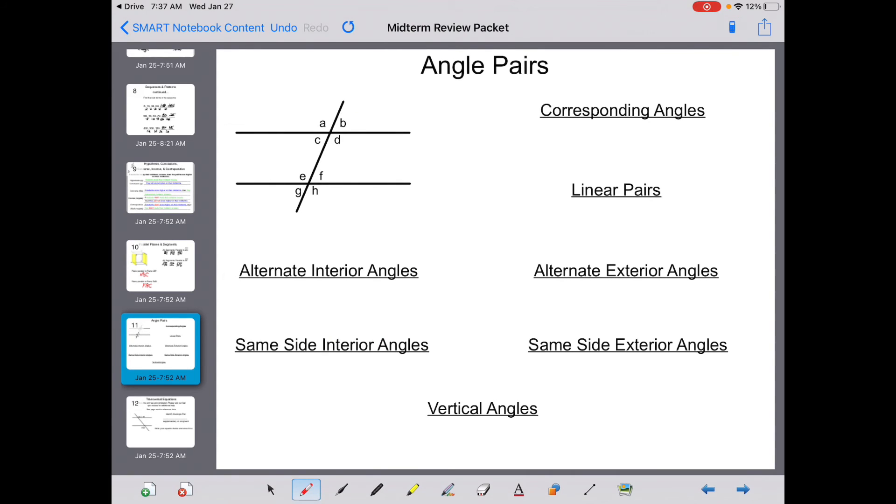Your angle pairs, corresponding angles. Remember, put your boxes around your groupings of angles. And which ones go together? A and E. B and F. C and G. And D and H.